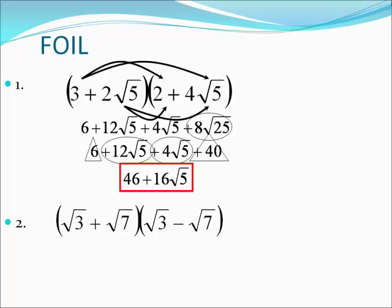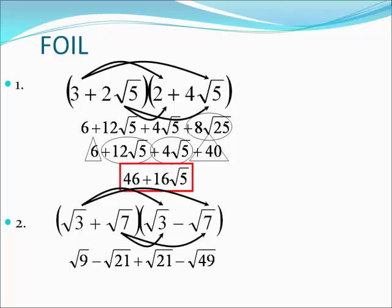On number two, try to foil this — pause until you're ready. First times first: √9. Outer times outer: negative √21. Inner times inner: positive √21. Last times last: negative √49. The middle terms cancel each other out. √9 is a perfect square — that's three. √49 is a perfect square — that's seven. And three minus seven is negative four for a final answer.